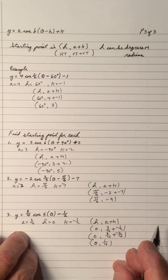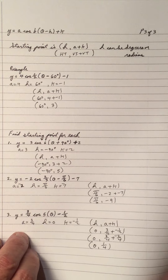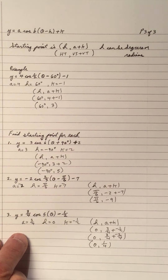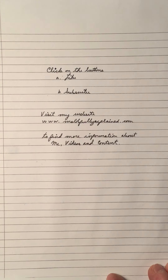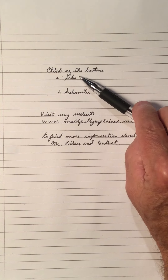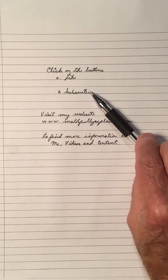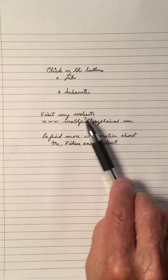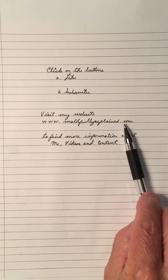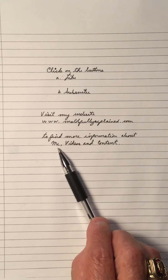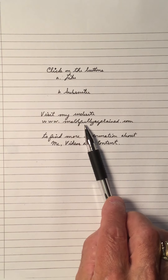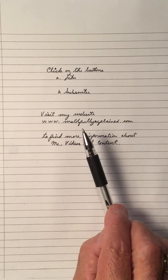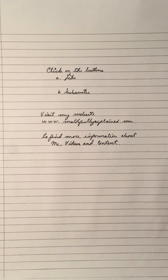We're going to use this starting point to graph a sine or cosine without using the mapping rule. Hopefully that practice is understood. If you like it, click my like button and subscribe button. Visit my math website www.mathfullyexplained.com to find more information about me, my videos, and the content on my YouTube channel called Math We Explain. Thank you for viewing my video — hope it was of some help to you.